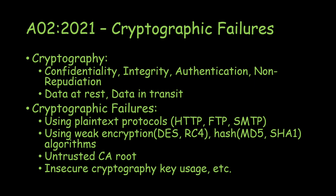Confidentiality means the data should not be disclosed to an unauthorized person. Integrity means the data should not be tampered with. Authentication means that when you're communicating with a server, you should know that this server is actually who it claims to be. Non-repudiation means that whatever actions somebody performs, they cannot deny that those actions were not performed by them. The main goal is to keep data secure.